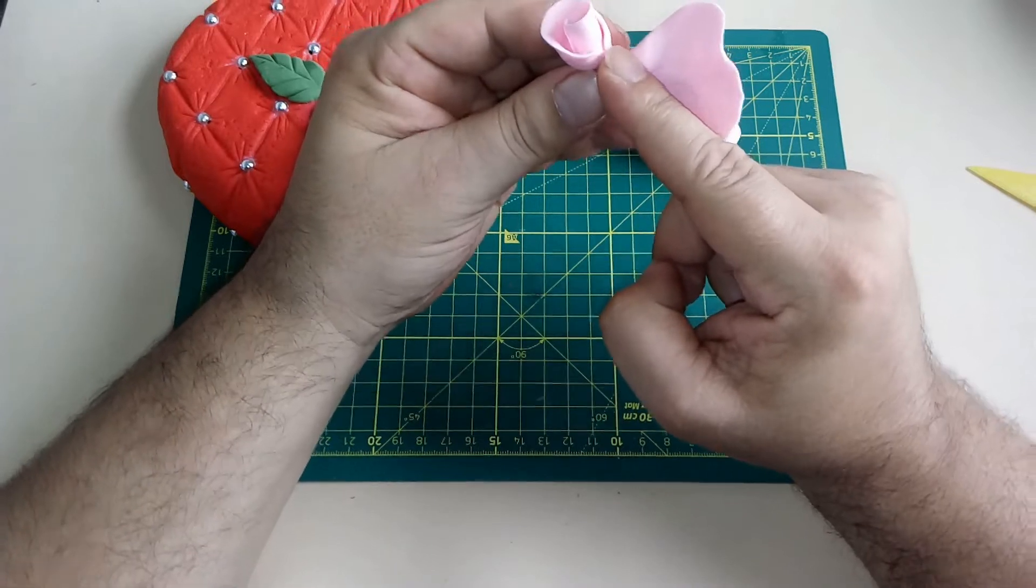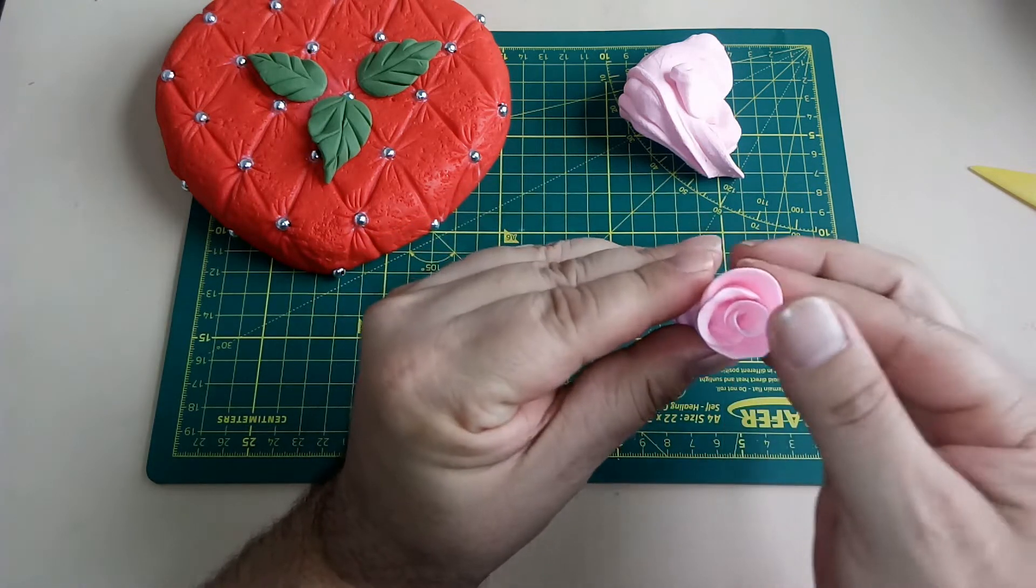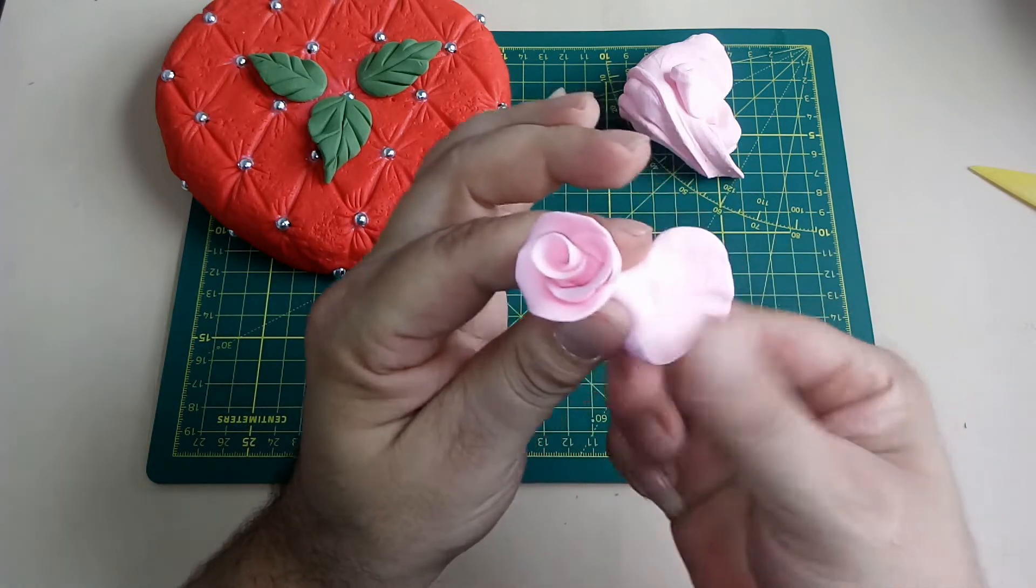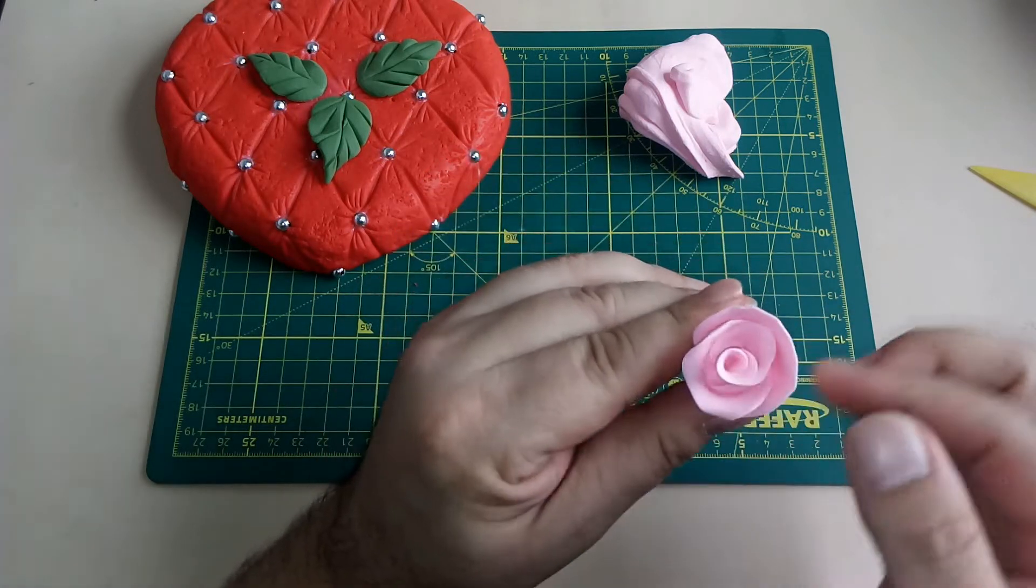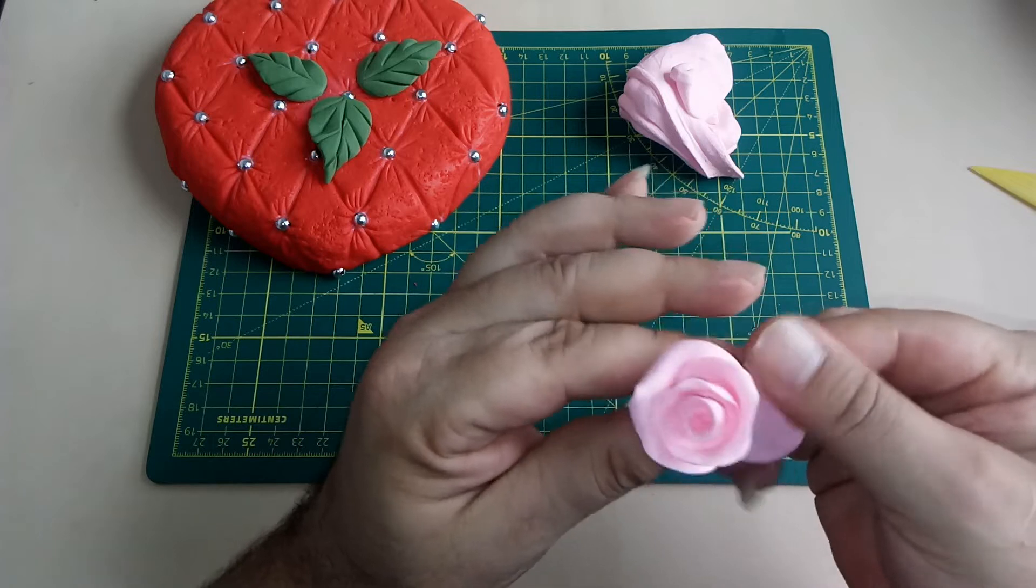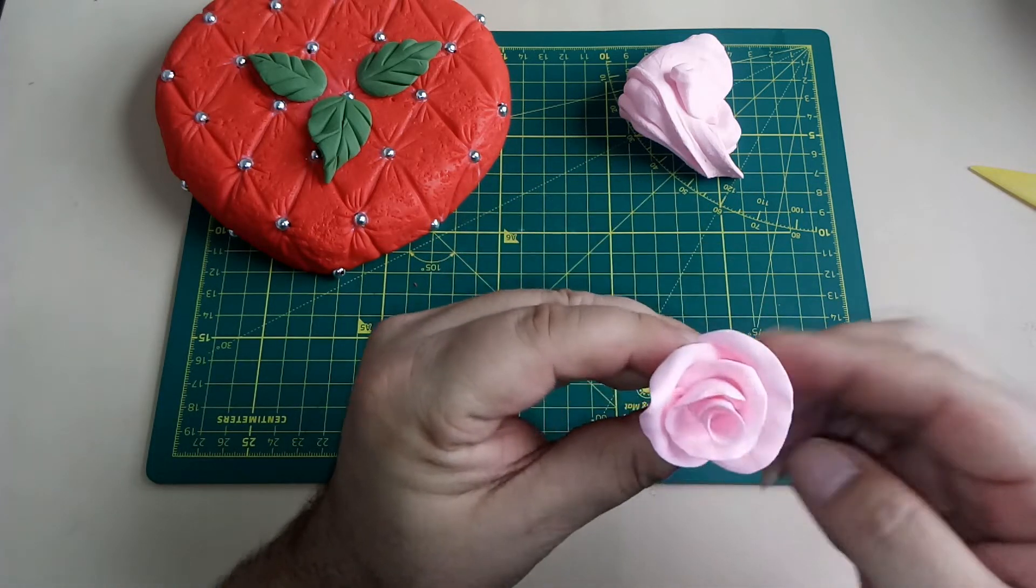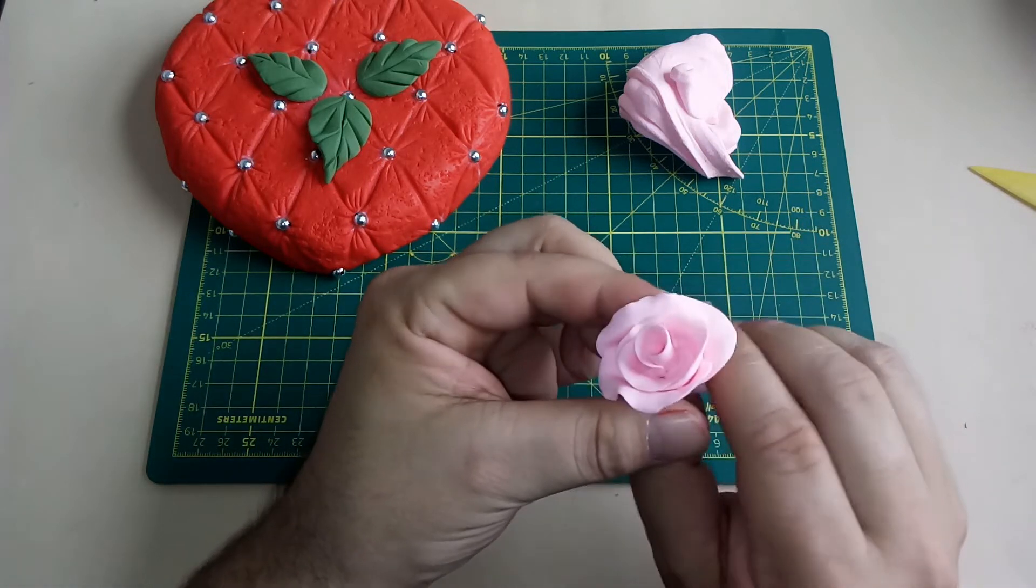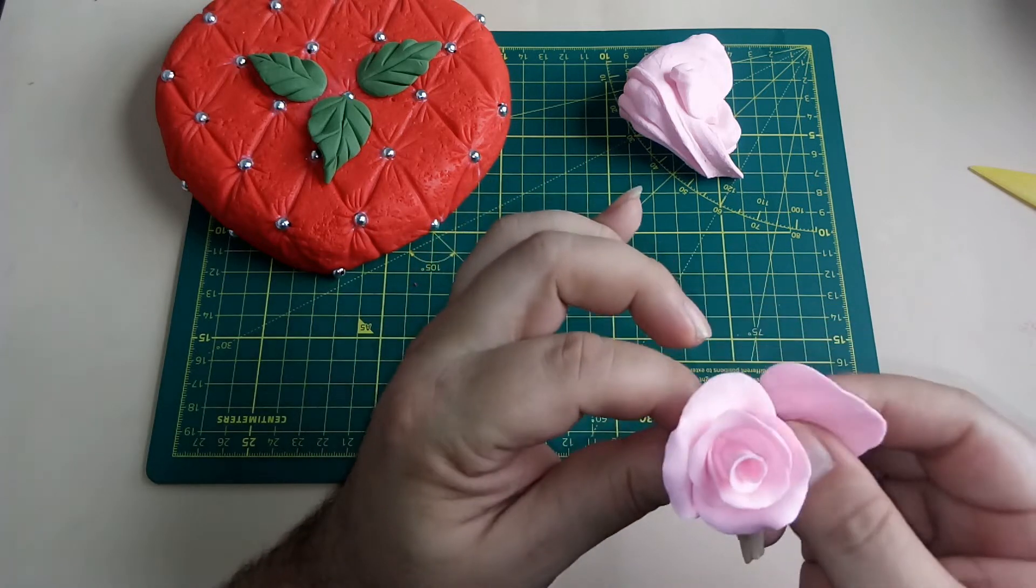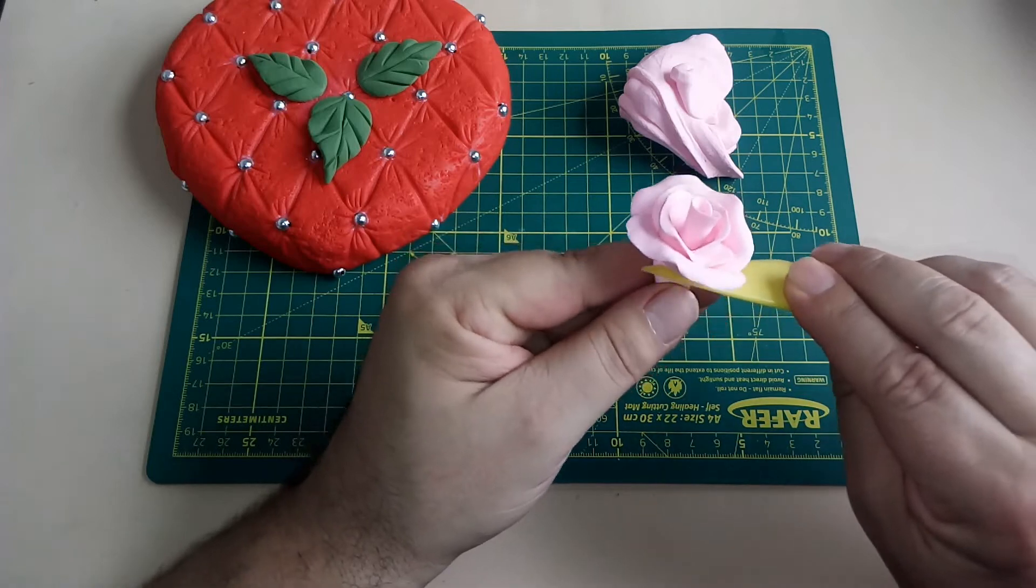Voy a donde tengo la unión, es donde yo tengo que superponer el siguiente pétalo, a esa altura. Le doy un poco de movimiento, de gracia, y cierro, presiono, superpongo, movimiento, y repito. Ahí vamos. Ya con este pétalo, nuestra flor creció lo suficiente. Llegué ahí, corto lo que sobra.